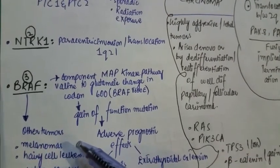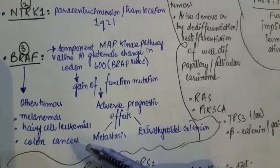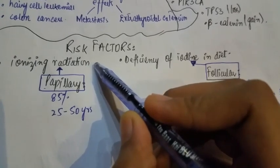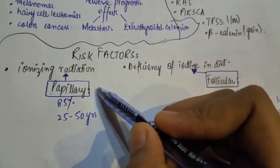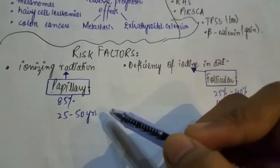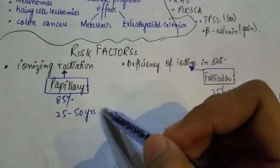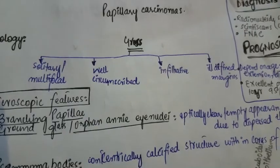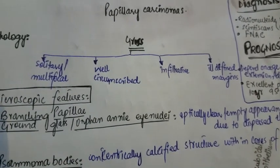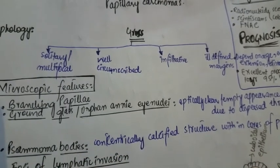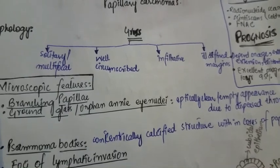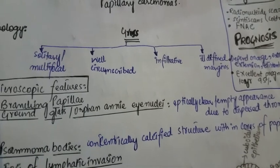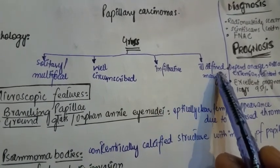BRAF is also associated with other tumors such as melanomas, hairy cell leukemia, and colon cancers. Risk factors for papillary carcinoma include ionizing radiation. It is present in 85% of cases, and the age risk factor is 25 to 50 years. Grossly, morphology shows solitary or multifocal nodules that are well-circumscribed but also infiltrative with ill-defined margins, consistent with a malignant tumor.